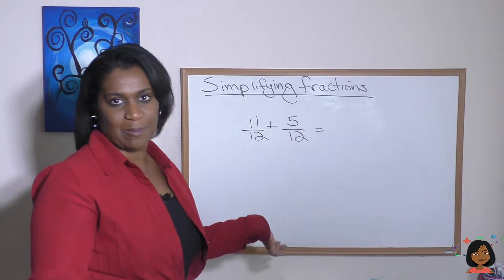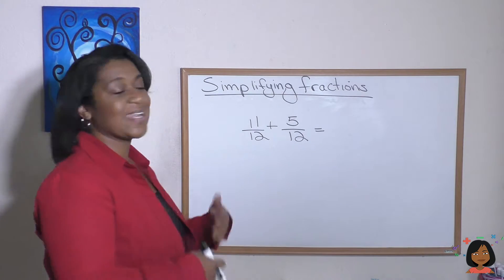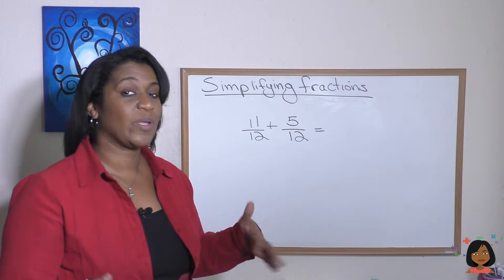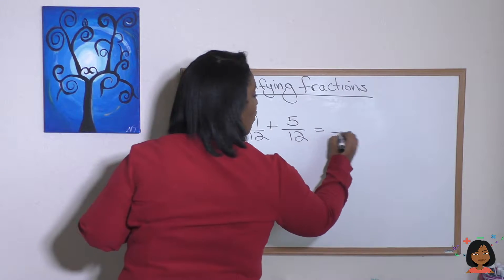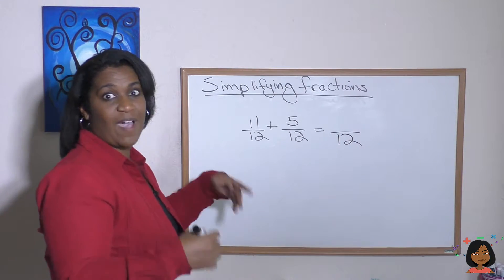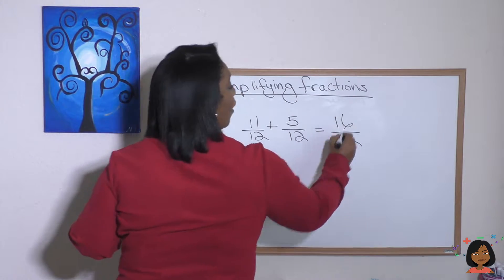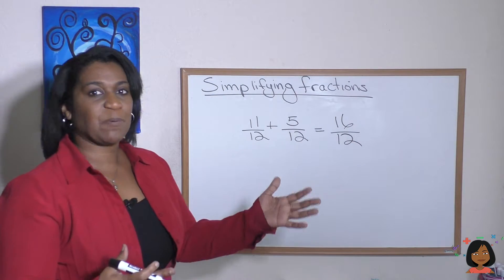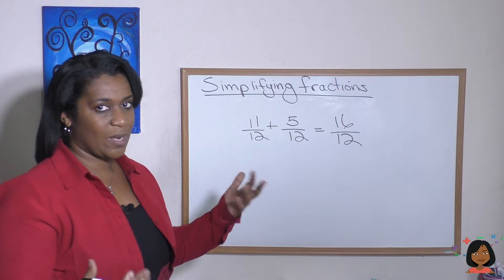So take a problem right here with some fractions. We want to add 11 twelfths plus 5 twelfths. We know we keep our denominator the same, which is twelfths, and we add our numerator. 11 plus 5 is 16. Now, we know we do not keep our answer like this. We do one of two things.